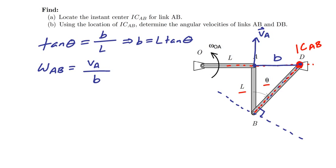And so if I go ahead and do a little bit of math here, I know that VA, the speed VA, is going to equal L times omega OA, and I need to divide that by B.